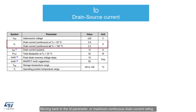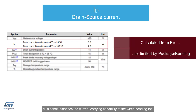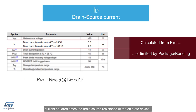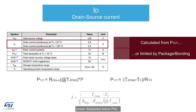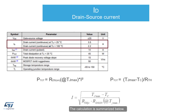The ID parameter, or maximum continuous drain current rating, is derived from either the maximum power dissipation P-TOT — which in turn is linked to maximum junction temperature — or in some instances the current carrying capability of the wires bonding the MOSFET die to the leads of the package. As with the P-TOT, you will often see different values specified by package type. Power dissipation can be calculated for continuous conduction by the current squared times the drain-source resistance of the on-state device, or RDS-on. So the maximum drain current is that which keeps the power dissipated below P-TOT. As RDS-on is a temperature-dependent parameter, the maximum drain current may be specified at different operating temperatures.